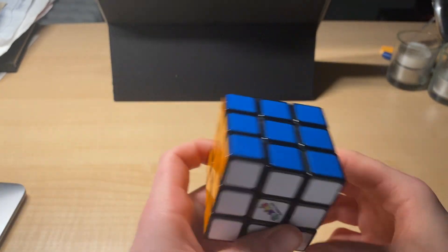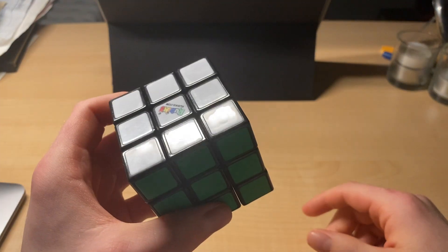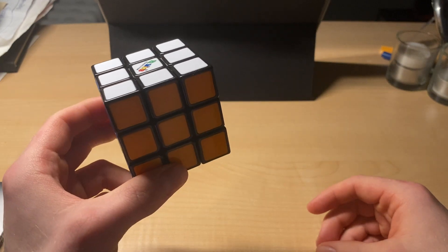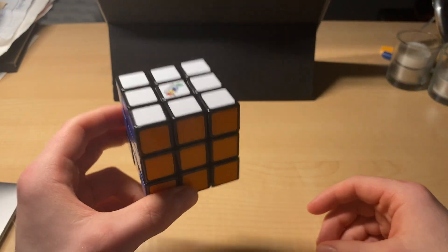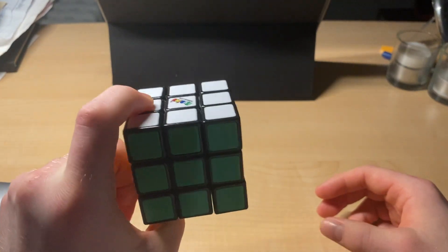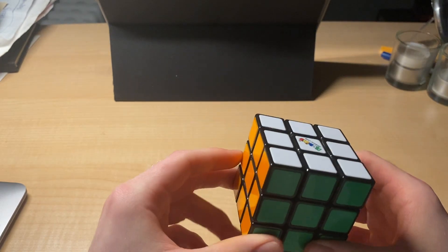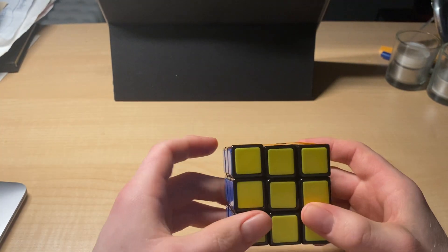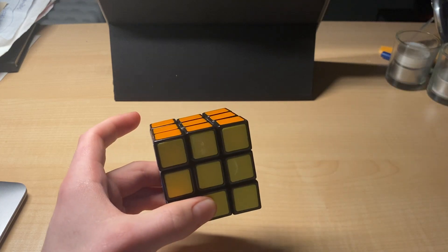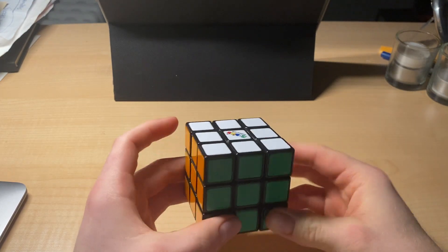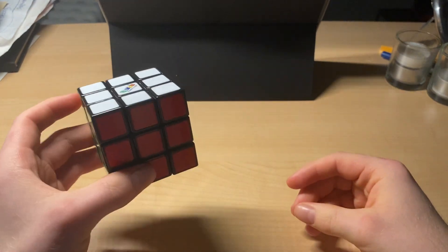Okay, so this is the cube. It starts out solved, and the first thing that you want to do is familiarize yourself with the cube itself. It has six colors, and what you'll notice if you look at solved cubes...